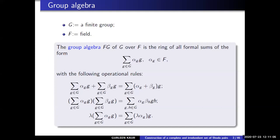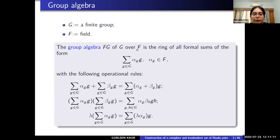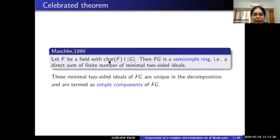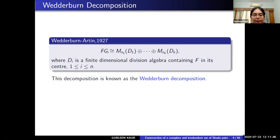Starting with the basic definition of group algebra: the group algebra FG of a finite group G over a field F is the ring of all formal F-linear combinations of the elements of G, together with component-wise addition and the natural way of multiplication. Now consider the field F such that the order of G is invertible in F. Then due to Maschke's theorem, FG is a semisimple ring — a direct sum of a finite number of minimal two-sided ideals. These minimal two-sided ideals are unique in the decomposition and are termed the simple components of FG. Wedderburn and Artin provided a theoretical description: each simple component is isomorphic to a matrix algebra over a division ring, where the division ring is a finite-dimensional division algebra containing an isomorphic copy of F in its center. This decomposition of FG as a direct sum of matrix algebras over division rings is known as the Wedderburn decomposition.